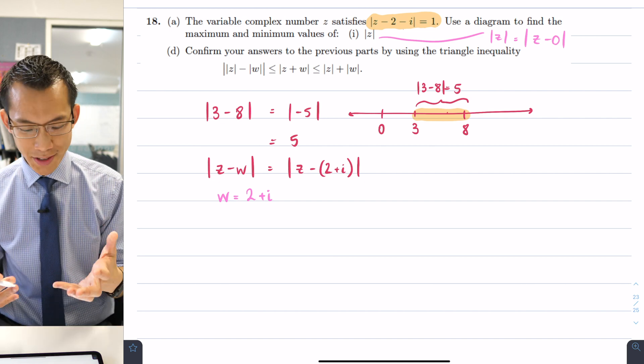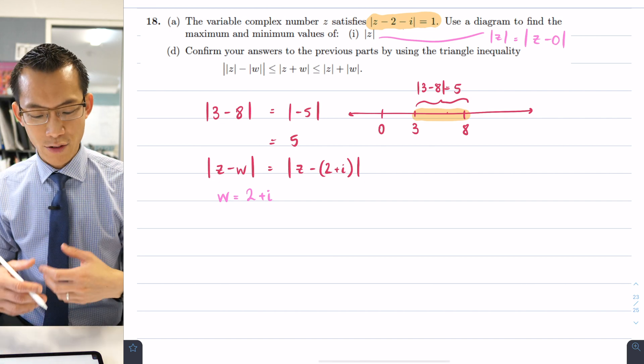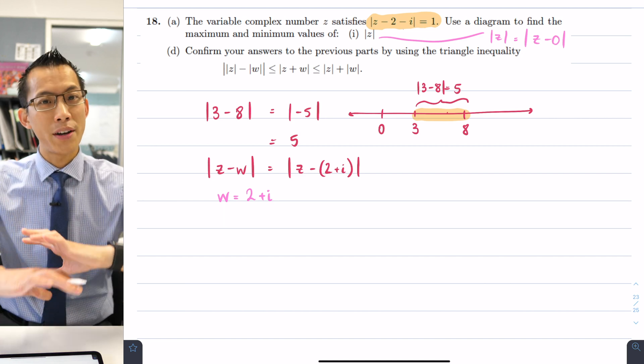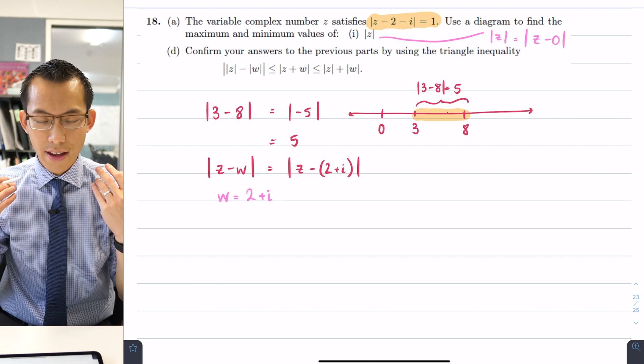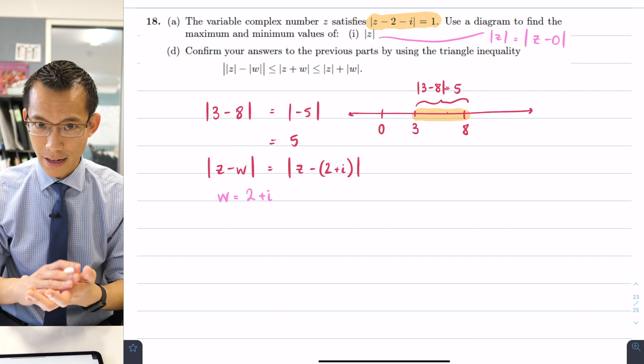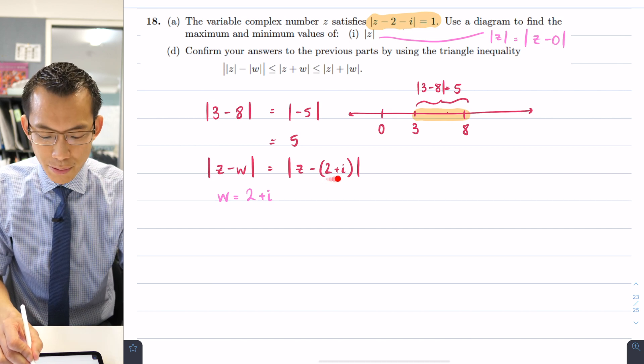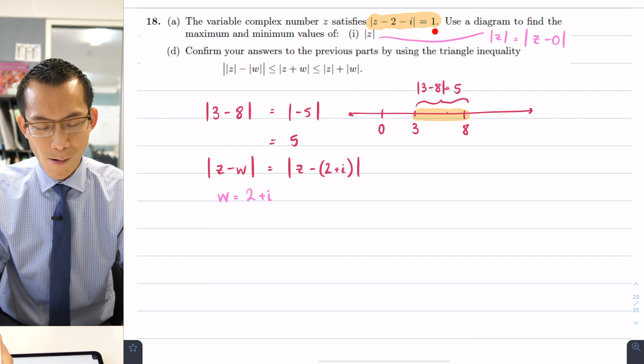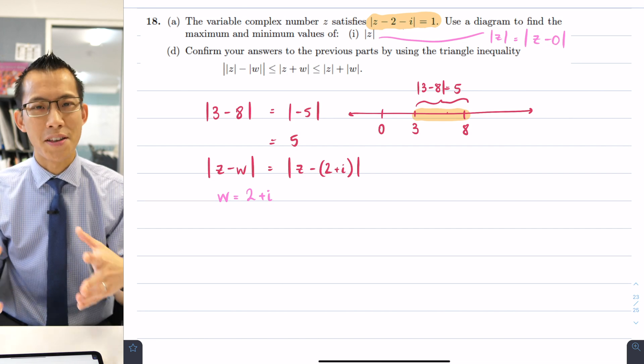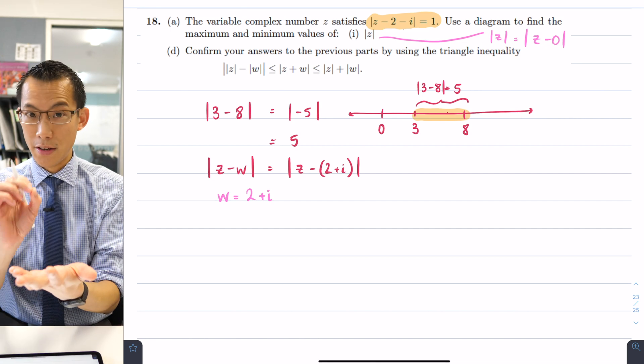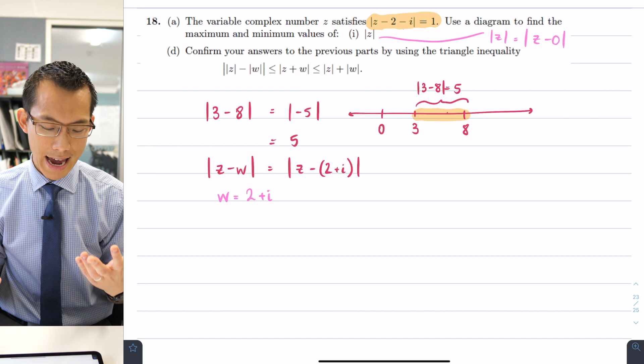It's a set of points z. It's a variable complex number z and we know every complex number is represented by a point on the complex plane and all of those points share this property that their distance from 2 plus i is going to equal 1. What's the name of the set of points that are all an equal distance from a central point and of course we know this is a circle.